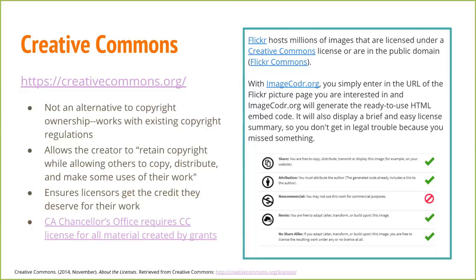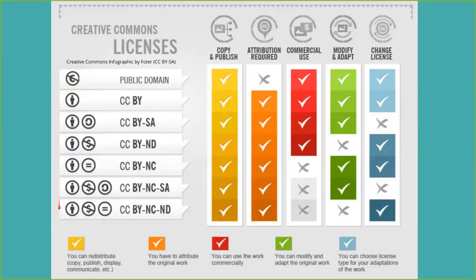Creative Commons is a great way to keep your information attributed to you but let other people use it. There are several different types of licenses. They basically break down into these categories: Do you want to allow people to use it? Do you want to require them to attribute it to you? Do you want to allow commercial use? Do you want to allow people to modify and adapt it, or do they have to use it as-is? And do you want to allow them to set up their own licensing terms if they do adapt it? Based on your answers, you choose one of the Creative Commons licenses. It doesn't cost anything — it's absolutely free.